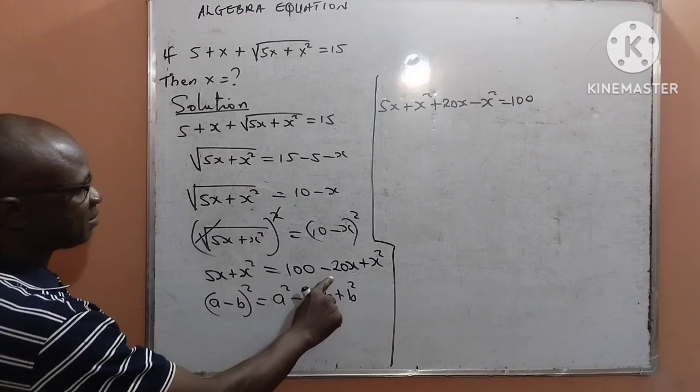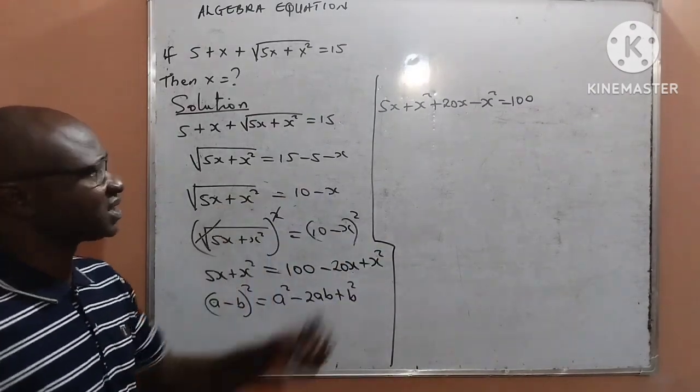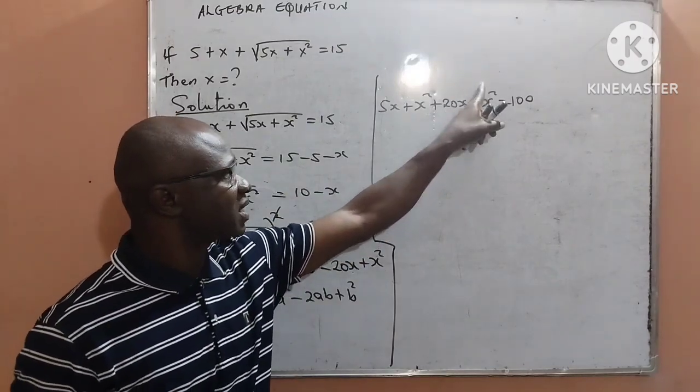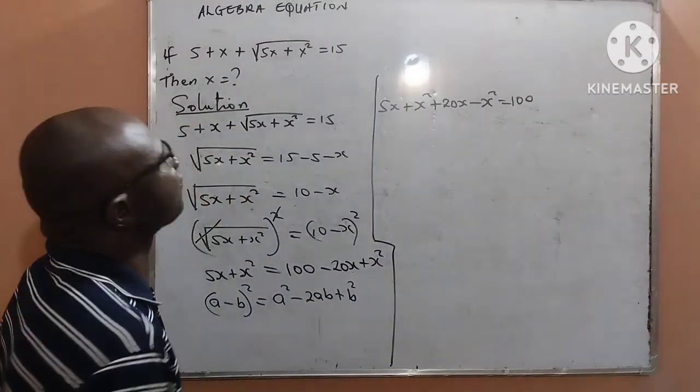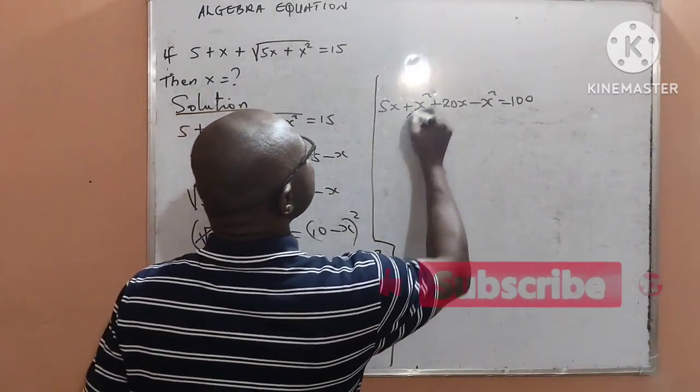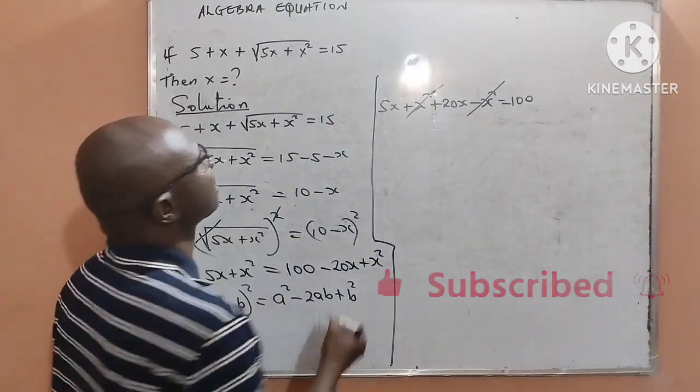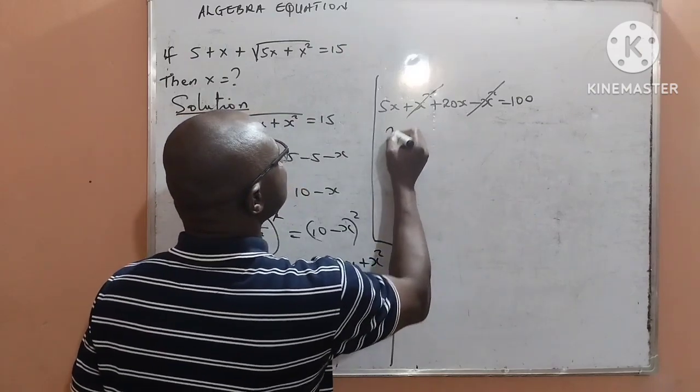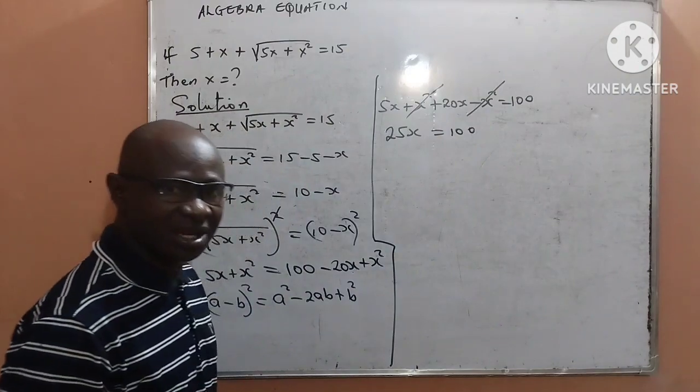What have I done? I moved minus 20x plus x squared to the left hand side and it resulted to plus 20x minus x squared. Left by the right hand side is just 100. Therefore, you can see that plus x squared will cancel out with minus x squared, leaving me with just 5x plus 20x which is 25x equal to 100.